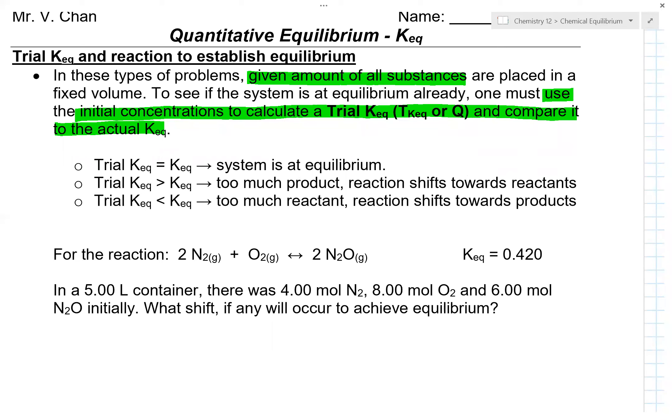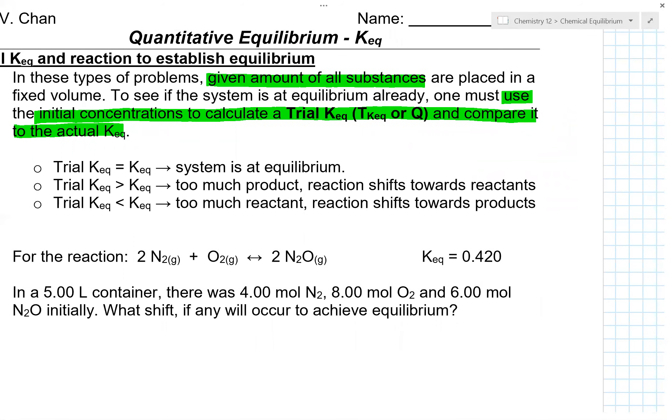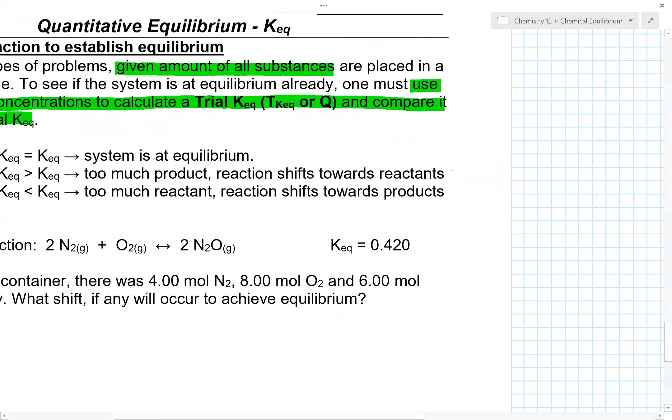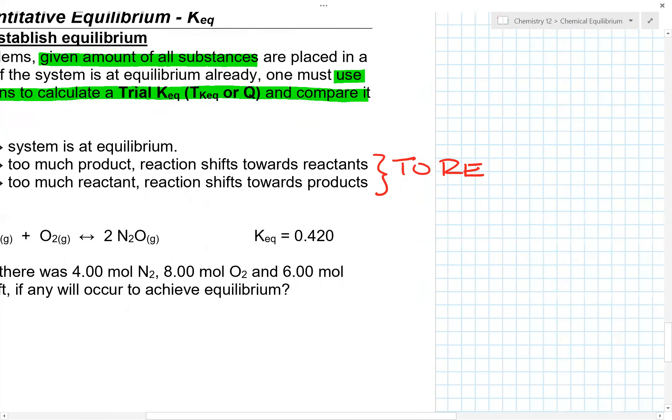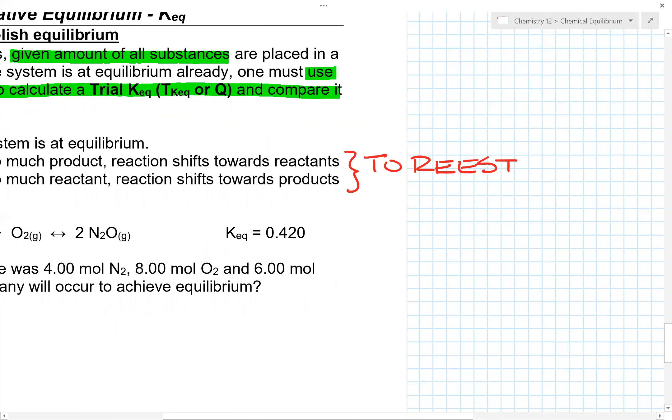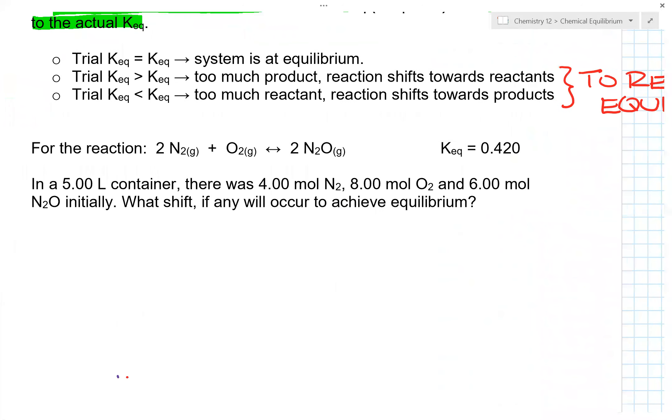Depending on the scenario, you might have the system at equilibrium, you might have too much product initially, or you might have too much reactant initially. And where does the equilibrium shift? So notice here it says reaction shift towards reactants or reaction shift towards products, and what this is, is to re-establish equilibrium.